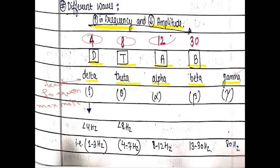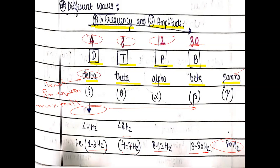To remember the frequencies, use the sequence 4, 8, 12, 30. Delta waves have a frequency less than 4 Hz — specifically 1 to 3 Hz. Theta waves are 4 to 7 Hz. Alpha waves are 8 to 12 Hz. Beta waves are 13 to 30 Hz. Gamma waves are around 80 Hz. As frequency increases, electrical activity of the brain is increasing and the brain is more alert.